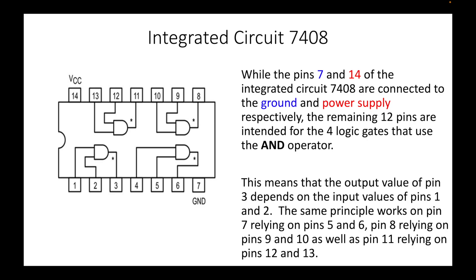Pins 7 and 14 of integrated circuit 7408 are connected to ground and power supply respectively. The remaining 12 pins are intended for the four logic gates that use the AND operator. The output value of pin 3 depends on the input values of pins 1 and 2. The same principle works on pin 7 relying on pins 5 and 6, pin 8 relying on pins 9 and 10, and pin 11 relying on pins 12 and 13.